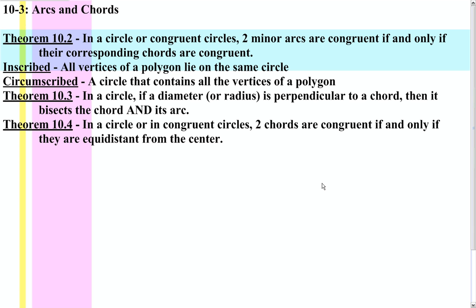If a polygon is inscribed, all the vertices lie on the same circle. A circle that is circumscribed contains all the vertices of that polygon.